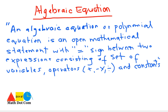It is a polynomial equation, as we have already studied about polynomial expressions which consist of one, two, or multiple variables. It is also a polynomial equation including an equality sign between two algebraic expressions that consist of operators, variables, and constants.